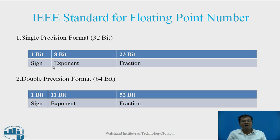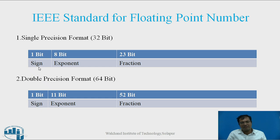So let us see both single and double precision formats. Single precision format has a 32-bit width. These 32 bits are divided into 3 parts: the first one is sign (1 bit), second is exponent (8 bits), and third is fraction (23 bits).